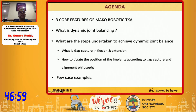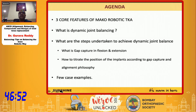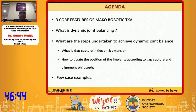Today I'm going to talk about three core features of macro robotic totally. Number one, what is dynamic joint balancing? Number two, what are the steps undertaken to achieve that dynamic joint balancing? And what is gap capture in flexion and extension, and how to titrate the position of implants according to gap capture and alignment philosophy?